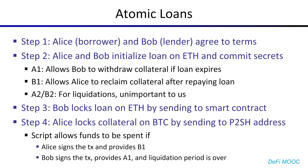So how exactly does it work? In step one, Alice, the borrower, and Bob, the lender, agree to some set of terms — for example, how much collateral, what the collateral ratio is, what stablecoins to pay, stuff like that. These terms can be agreed on anywhere, but you'll probably be agreeing to them on the Ethereum blockchain, where there is a smart contract to help facilitate this.